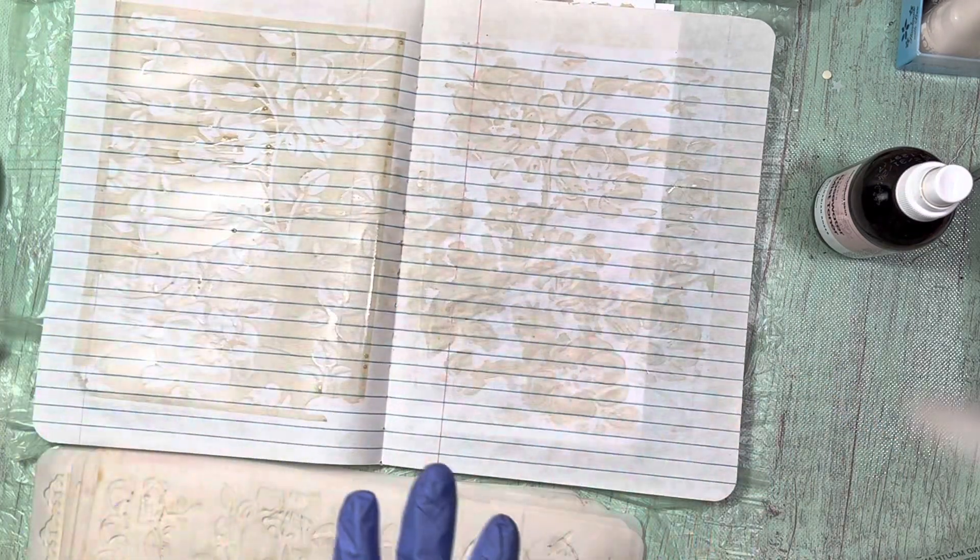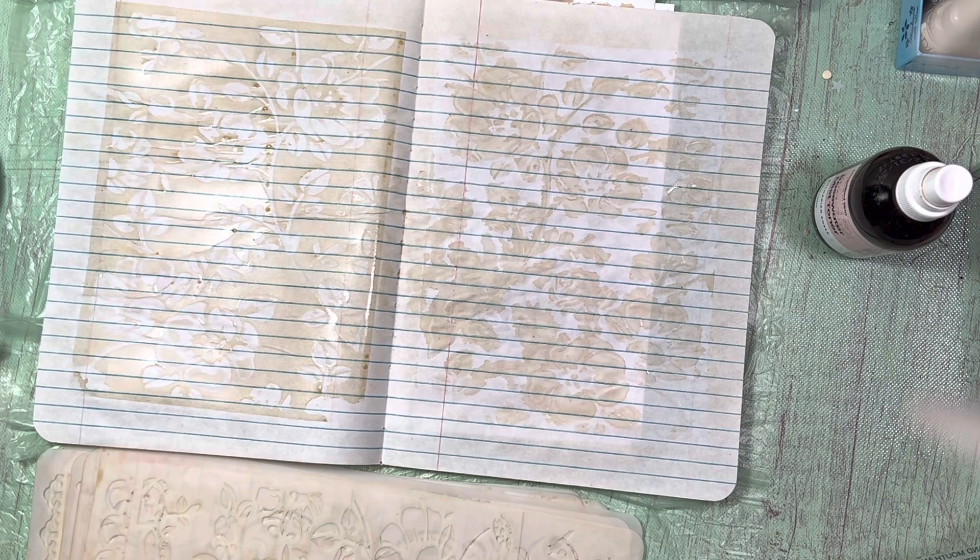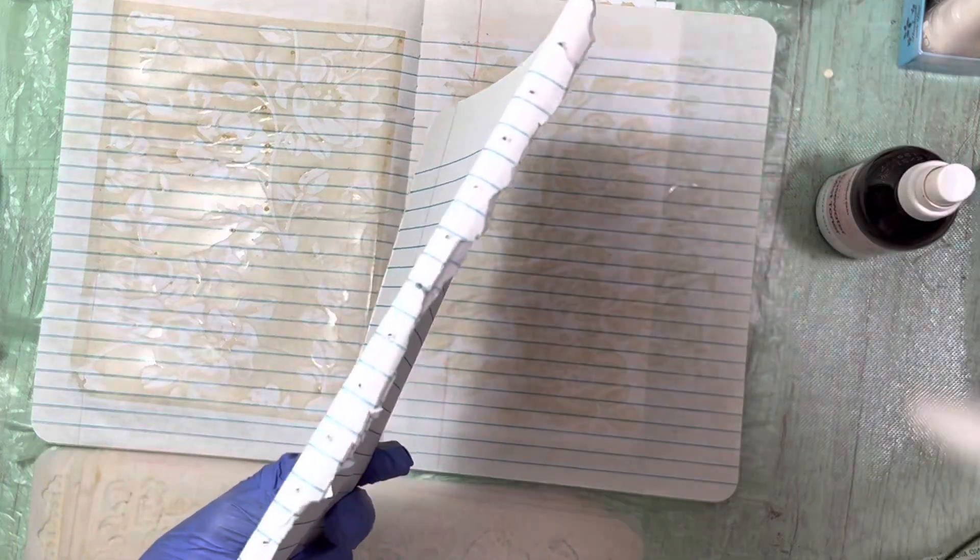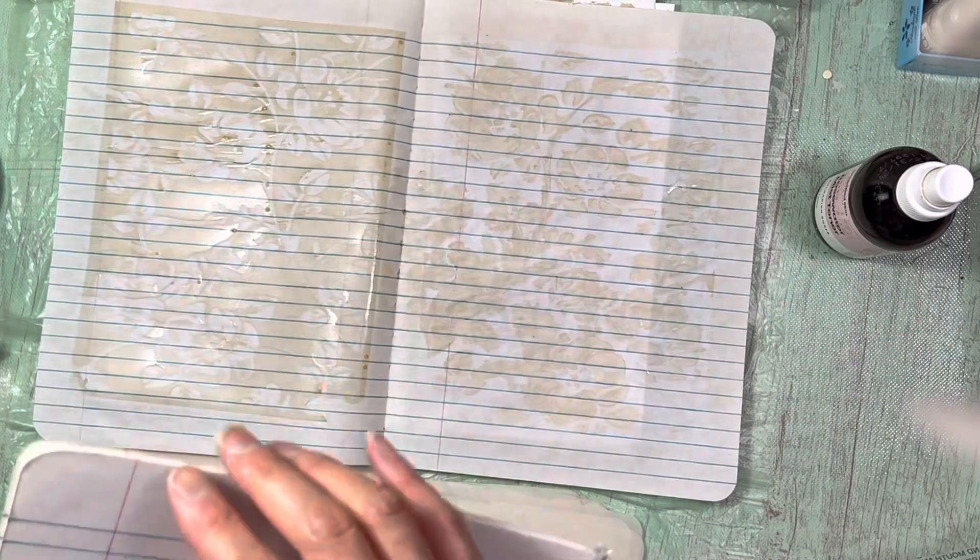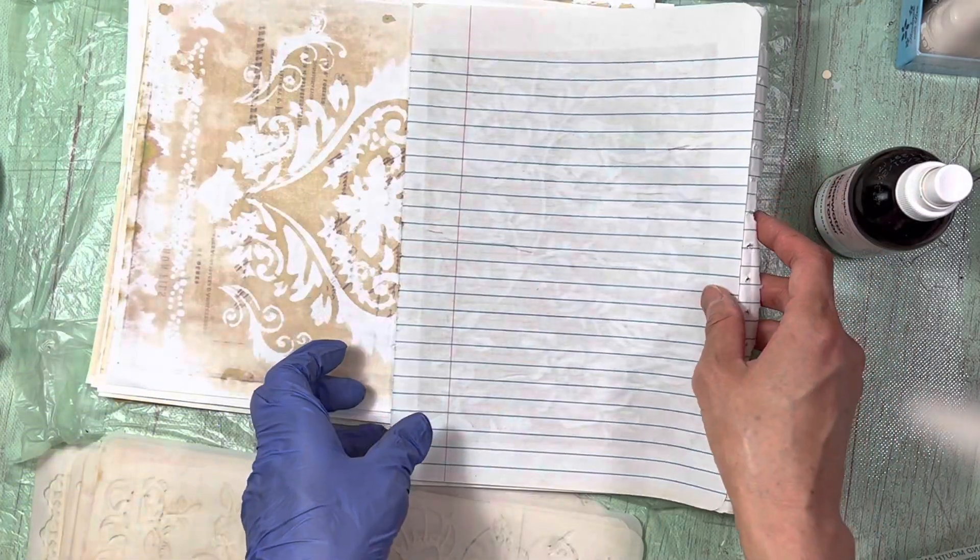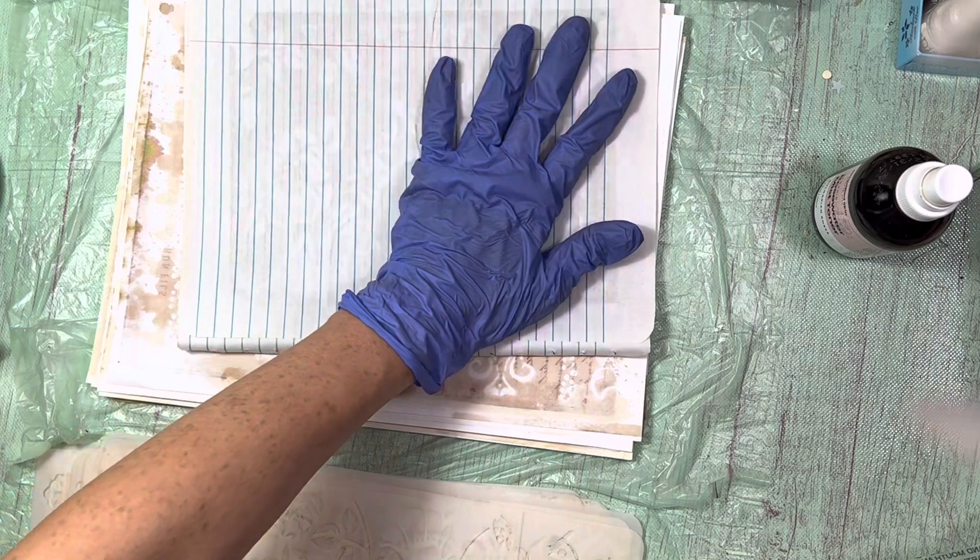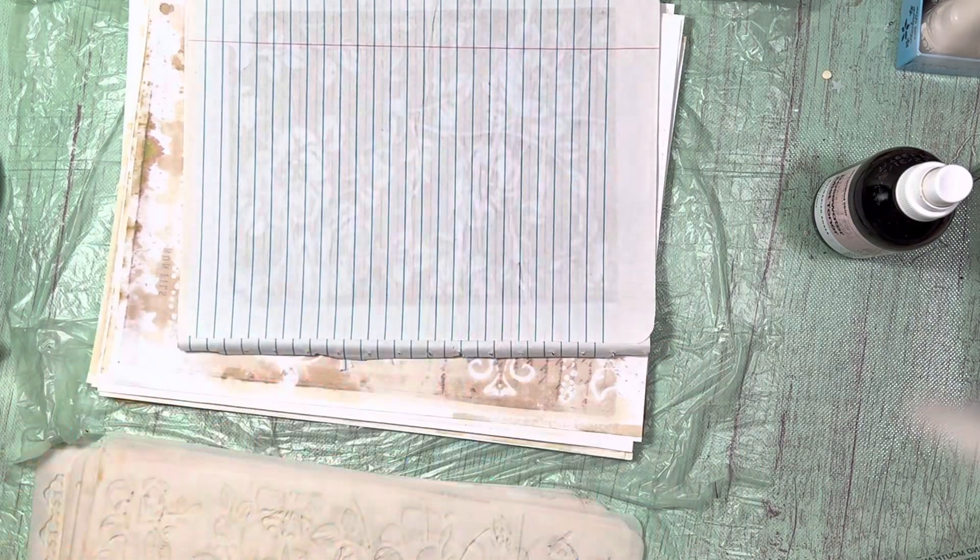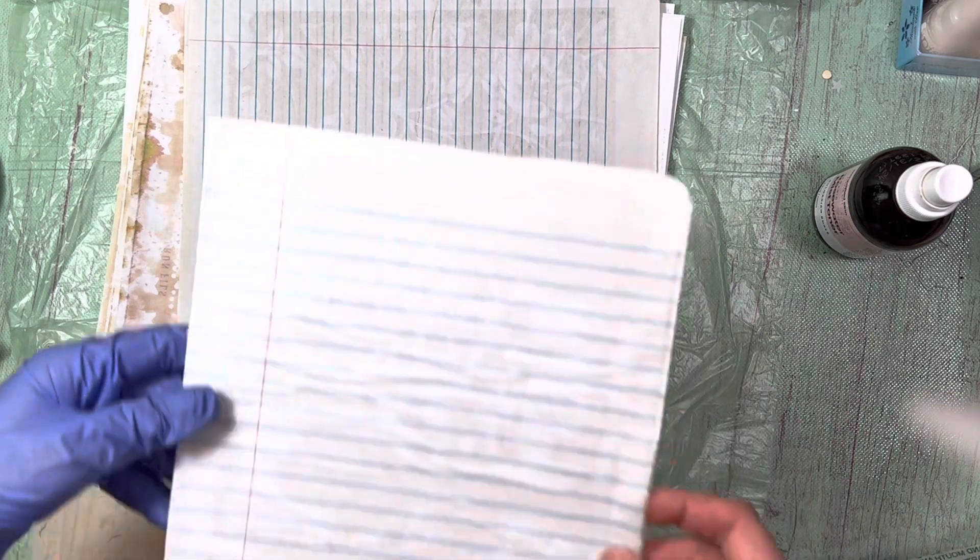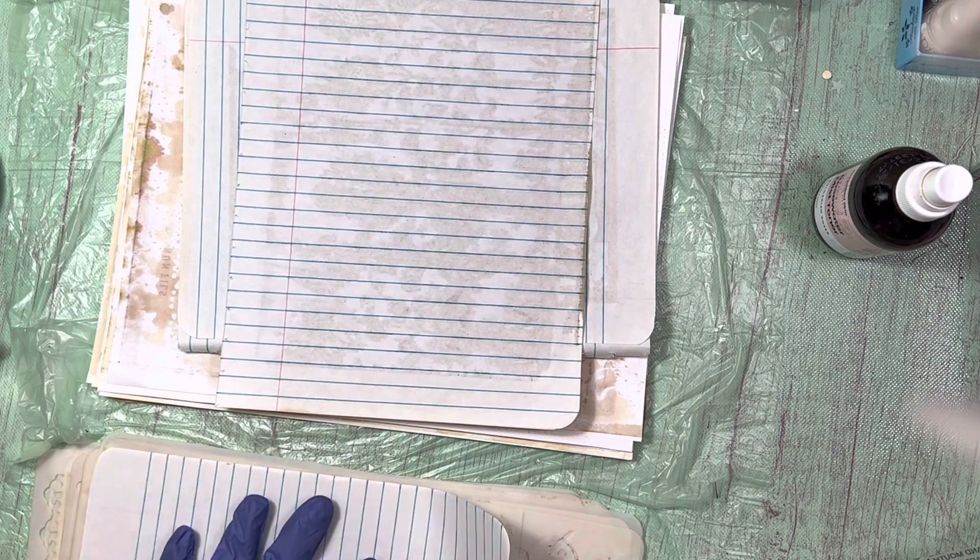So I think what I'm going to do is I'm going to take some of this composition paper that whoever used this, they like tore out one side. So I'm just going to sandwich it in between. And I guess what's happening with the composition paper is that it's not really soaking in as much as other paper, like printer paper, or at least that's what it seems like.